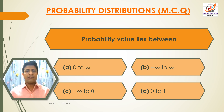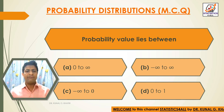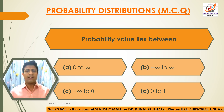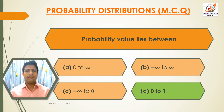Next question: probability values lie between. Option A: 0 to infinity. Option B: minus infinity to infinity. Option C: minus infinity to 0. Option D: 0 to 1. The answer is option D, 0 to 1.